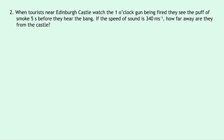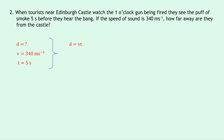Question two says that when tourists near Edinburgh Castle watch the one o'clock gun being fired, they see the puff of smoke five seconds before they hear the bang. If the speed of sound is 340 meters per second, how far away are they from the castle? We're trying to find the distance. Speed is 340 and time is 5 seconds. Writing down d = vt and substituting in: 340 times 5 gives an answer of 1700 meters.